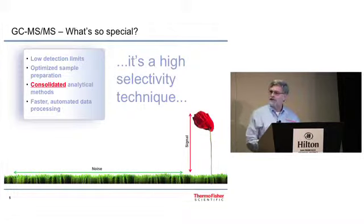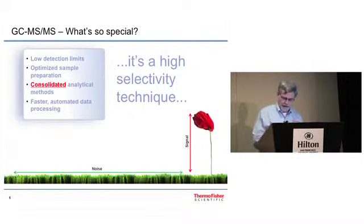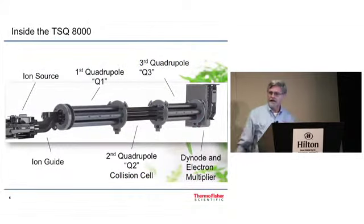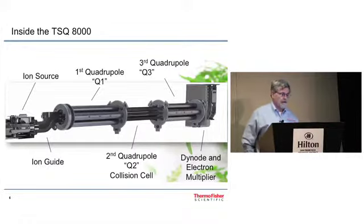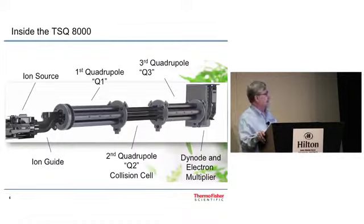And I want to just show you how a triple quad works and why it's so selective. This is what the inside of the TSQ-8000 looks like. We have an ion source, which then goes through an ion guide, which is S-shaped, goes into the first quadrupole, second quadrupole, which is the collision cell, the third quadrupole, and then into the electron multiplier.